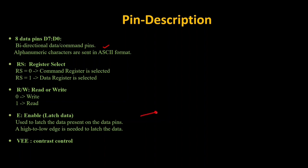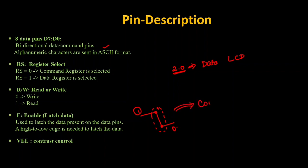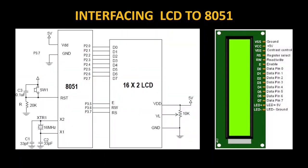The enable pin works on a high-to-low transition. Initially we take the data and keep it on Port 2, since Port 2 is connected to the data pins of the LCD. We keep the data ready on Port 2 and then create the transition from 1 to 0 so the data is moved to either the command register or data register depending on the RS value. Note: in the previous video there was a small mistake - P3.6 is RW and P3.7 is RS. Please make that correction.